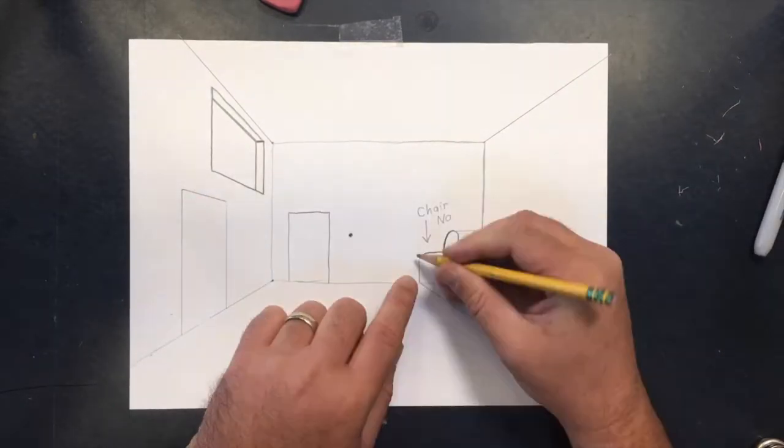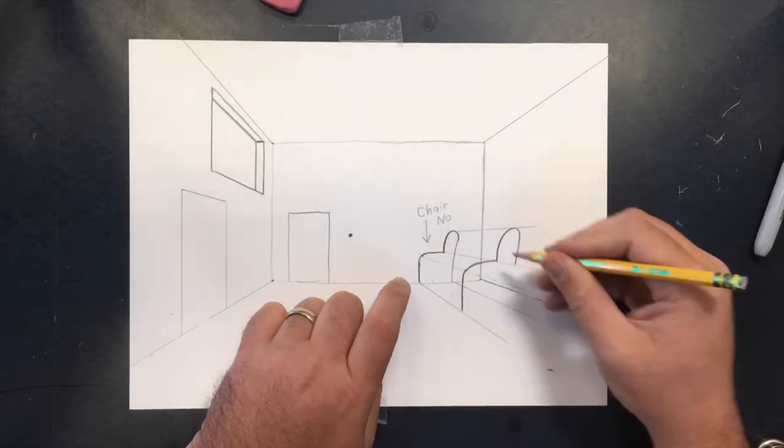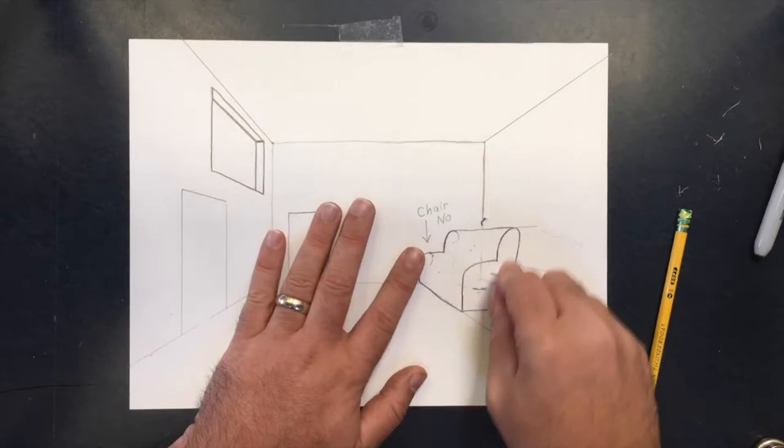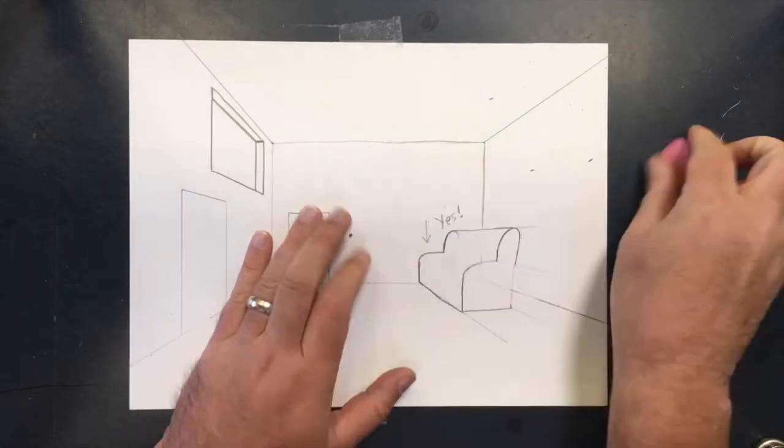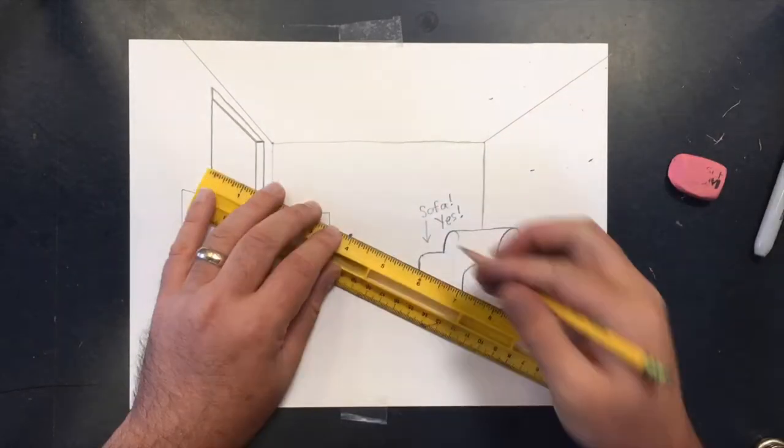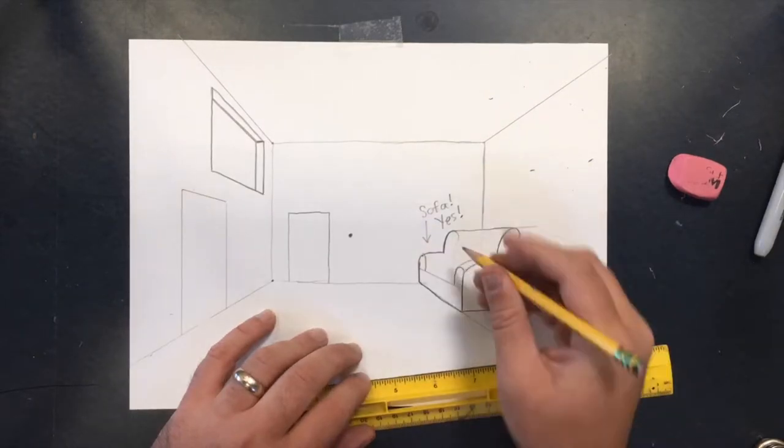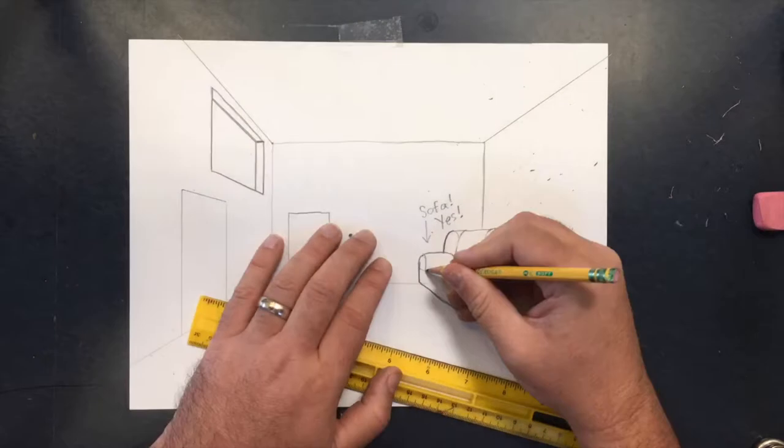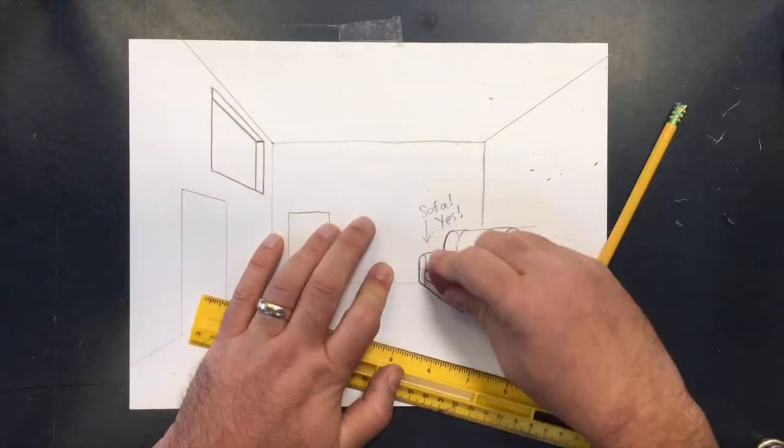To make the objects three-dimensional, draw them on the back wall, then use the vanishing point to draw guidelines that go away from every corner of the object. This will help you draw a bigger, closer copy of that first shape that you drew. And now you have the front and the back of a couch here, and you have the diagonal lines that connect the front and the back of the couch.